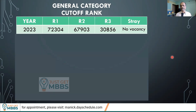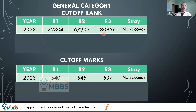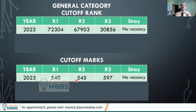Looking at the cutoff marks for general category in 2023: round 1 closed at All India rank 72,000 (NEET score 540), round 2 at 67,000 (545), and round 3 at a much higher cutoff of 30,000 AIR (597). There were no vacancies in the stray round. As I always say, if you are interested in a good deemed university, try to get in during round 1, as cutoffs in deemed universities tend to increase significantly by round 3.